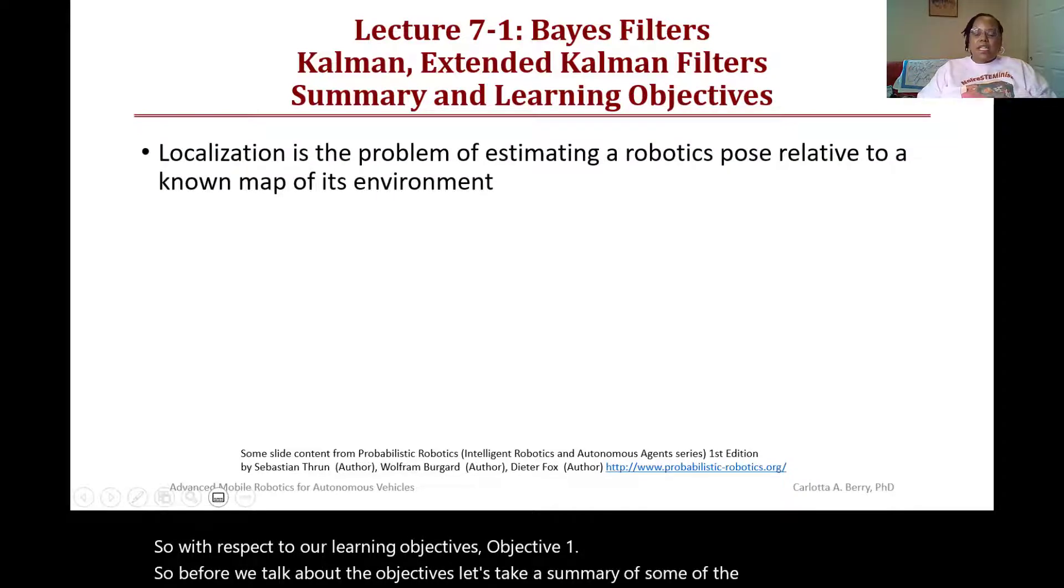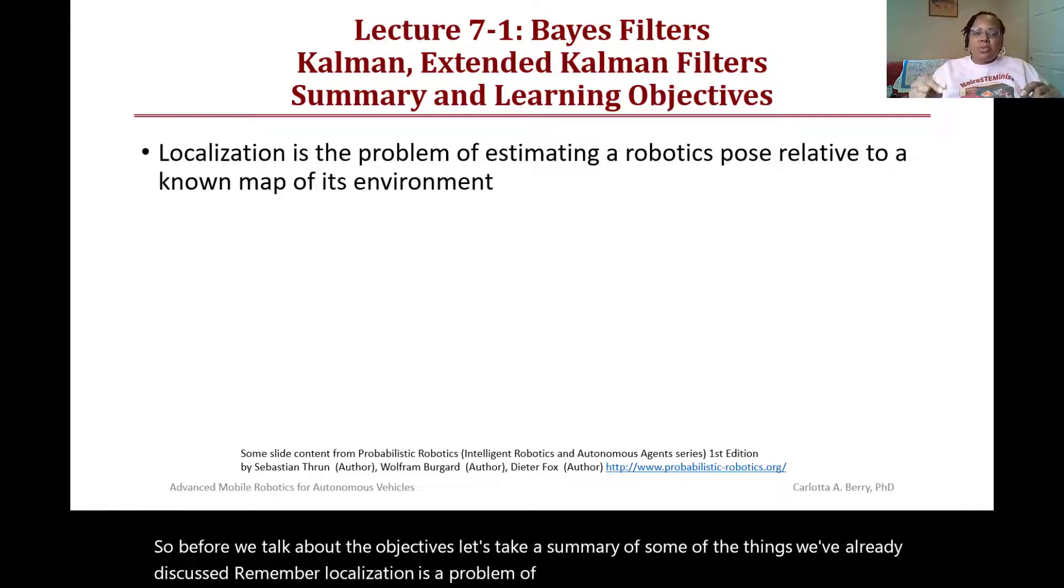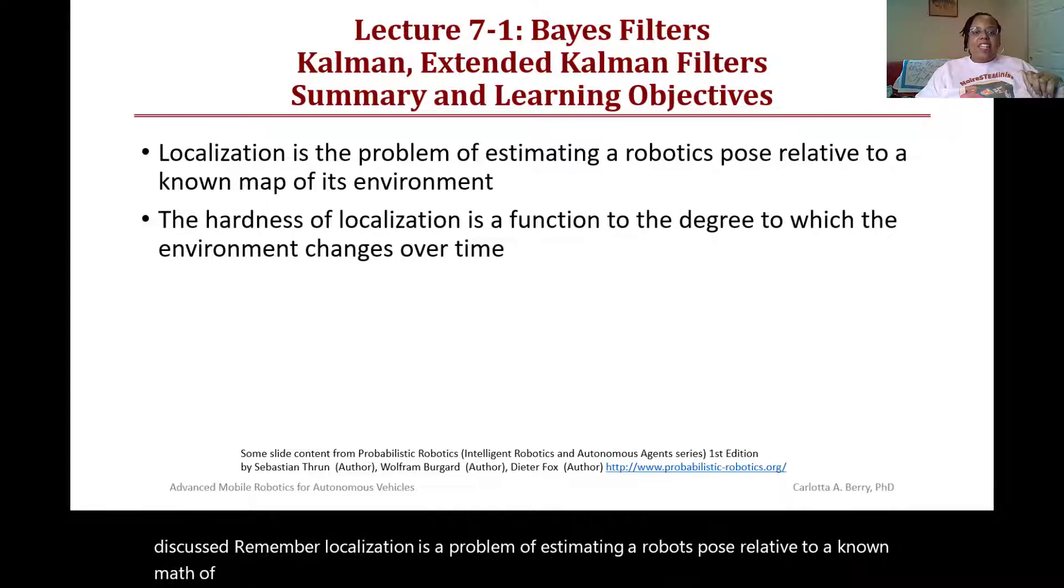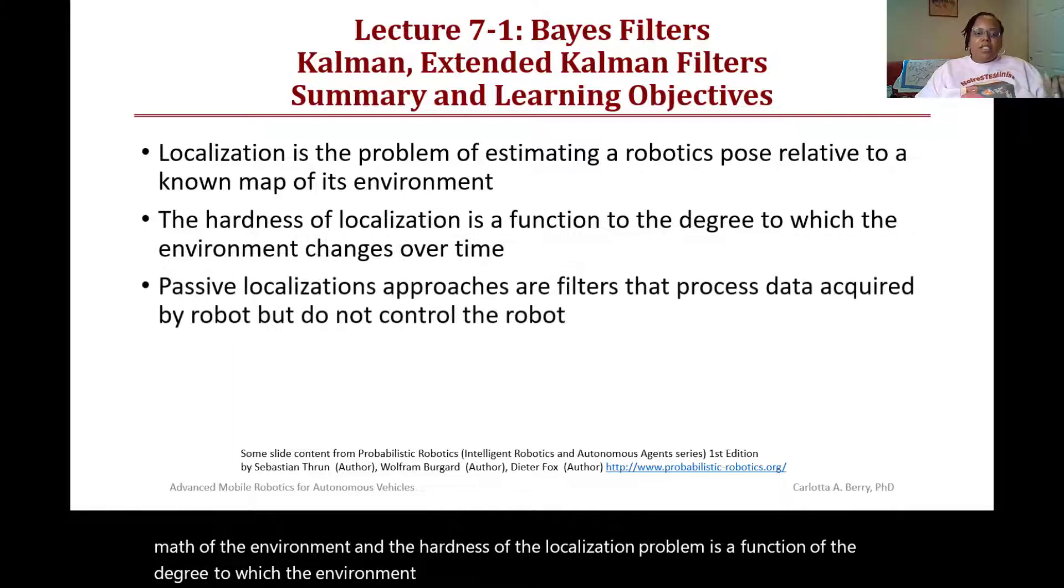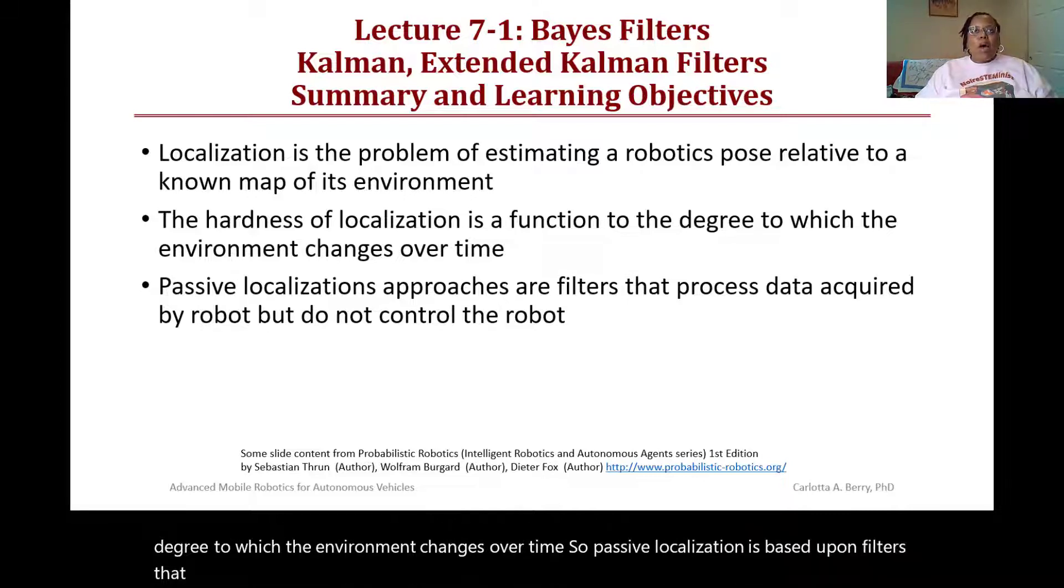Localization is the problem of estimating a robot's pose relative to a known map of its environment. The hardness of the localization problem is a function of the degree to which the environment changes over time.